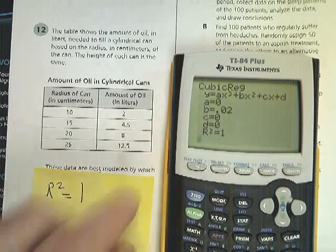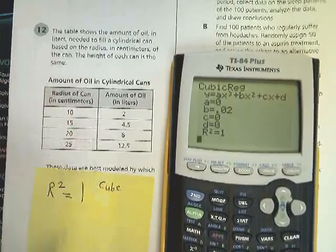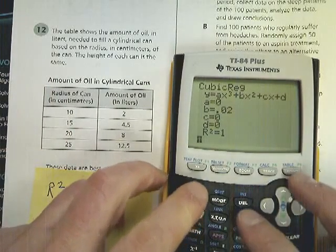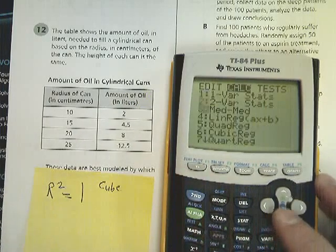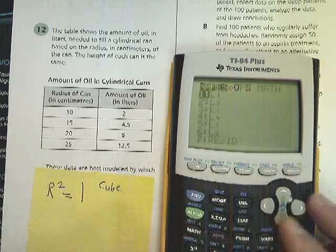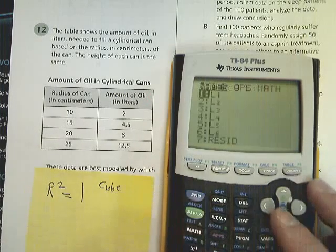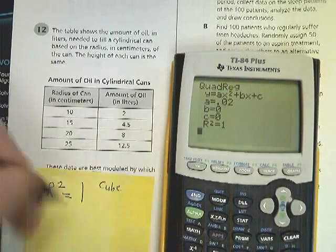This is a cube, by the way. Let's look at that quadratic and quit out of this. Go to the calculator and do the quadratic equation or quadratic regression, pick your lists.